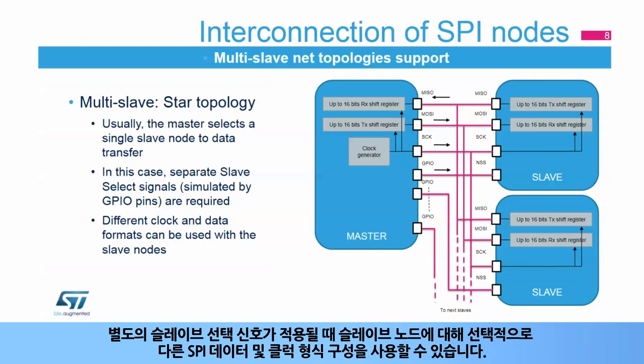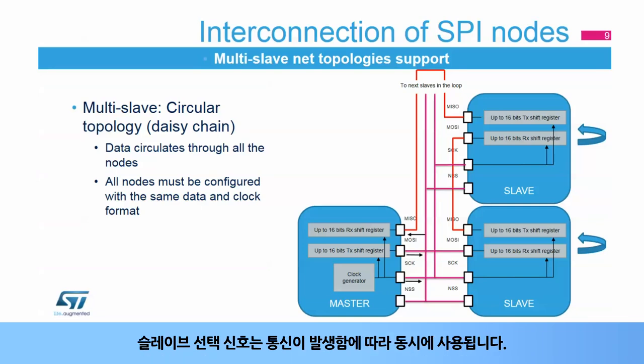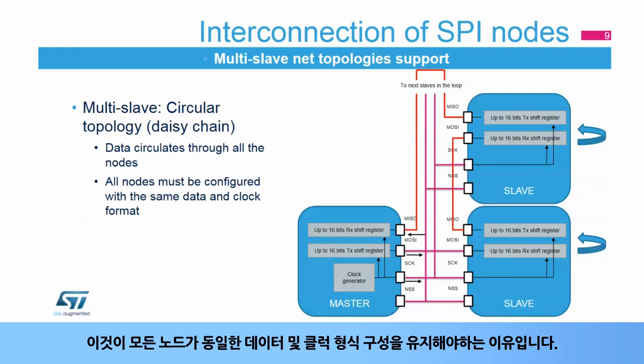When separate slave select signals are applied, a different SPI data and clock format configuration can be used optionally for the slave nodes. Another multi-slave configuration is the circular topology where all the data inputs and outputs of the nodes are connected together in a closed serial chain. A common slave select signal is used as communication occurs at the same time. This is why all the nodes have to keep the same data and clock format configuration.